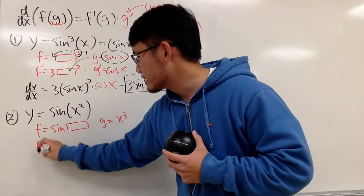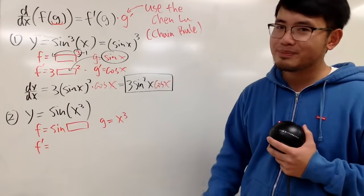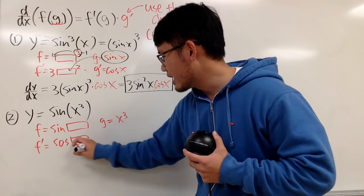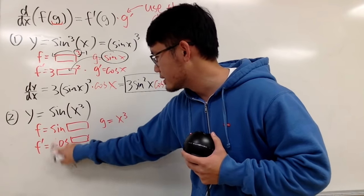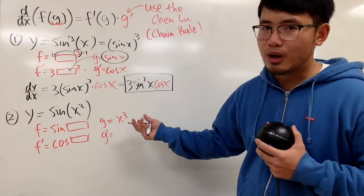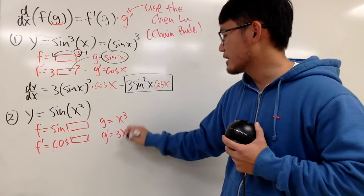And then if you differentiate sine of a box, what do you get? Cosine of a box. Very good. All right? Cosine of a box. This is my c. And then when you differentiate x to the third power, you get 3x squared.